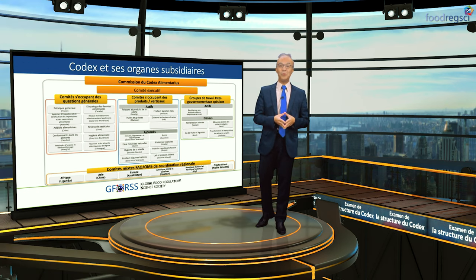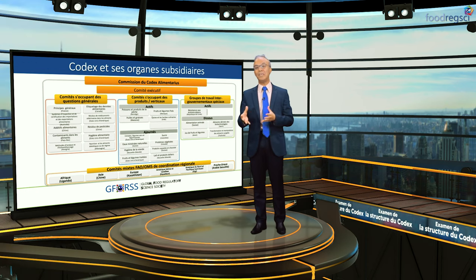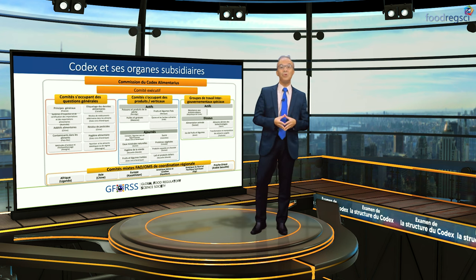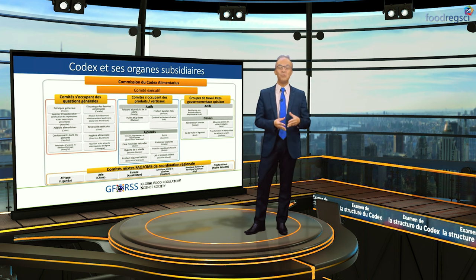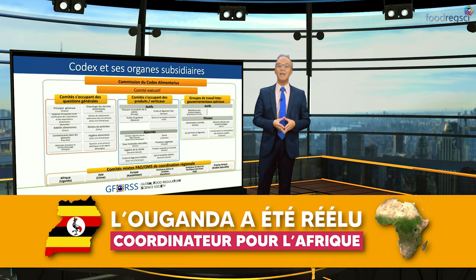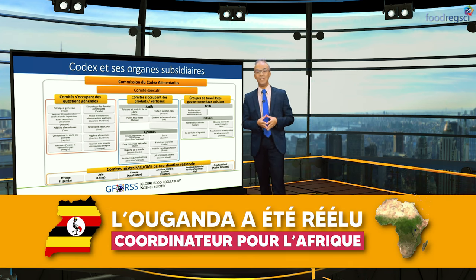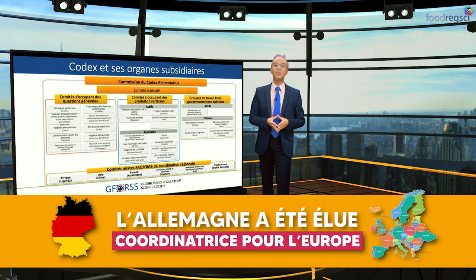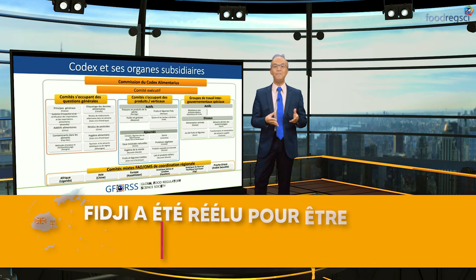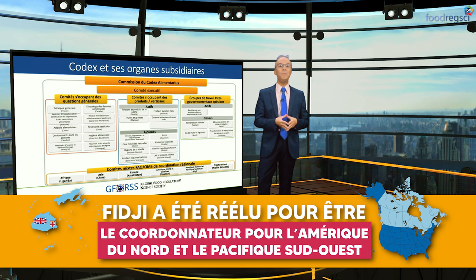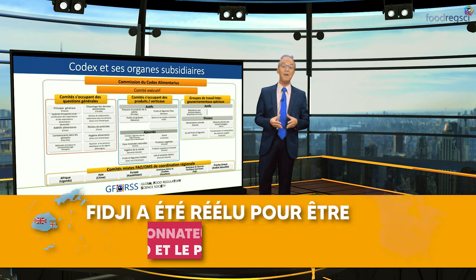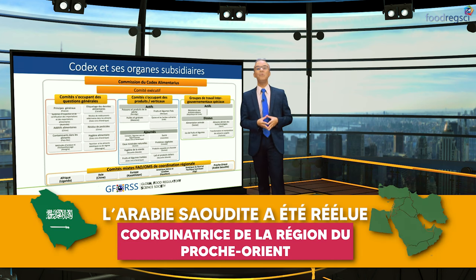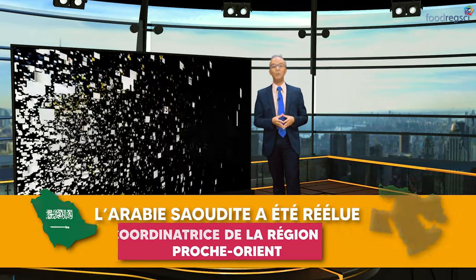Au moment de la production de ce programme, nous avons la structure représentée devant vous. Cette structure comprend des comités de coordination où l'Ouganda a été réélu comme coordinateur pour l'Afrique, la Chine comme coordinatrice pour l'Asie, l'Allemagne élue comme pays coordonnateur pour l'Europe, Fidji réélu comme pays coordonnateur pour l'Amérique du Nord et le Pacifique du Sud-Ouest, et enfin l'Arabie saoudite réélu comme pays coordonnateur de la région du Proche-Orient.